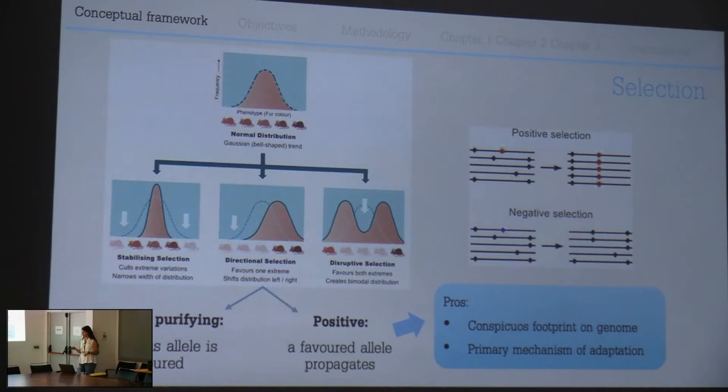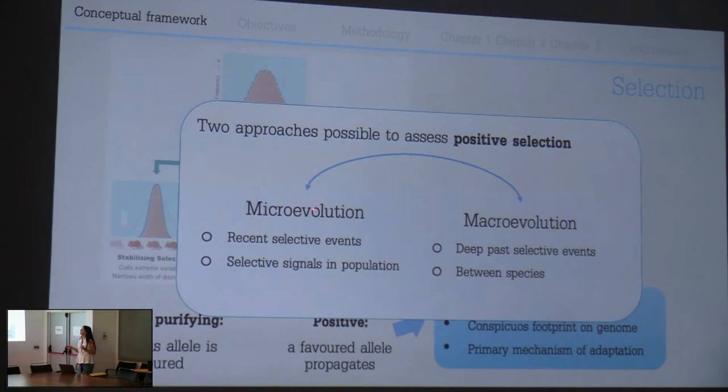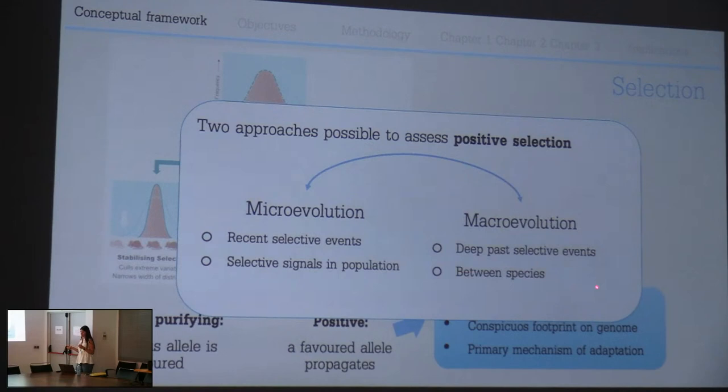There are two approaches to detect positive selection: the micro and macroevolutionary perspectives. These differ in when the selective events occurred. The microevolutionary perspective addresses recent selective events, suitable for analysis within a species. The macroevolutionary perspective addresses past selective events, suitable for analyzing selection between species.